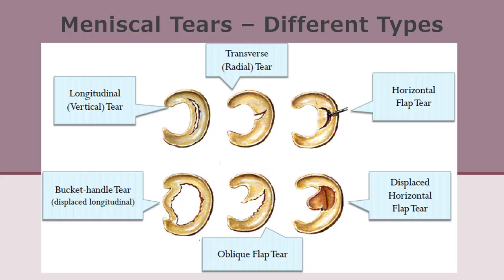Meniscus tears are classified by their shape and location. Different types of meniscus injuries include a longitudinal or vertical tear, a transverse or radial tear, horizontal flap tear, a bucket handle tear, an oblique flap tear, and a displaced horizontal flap tear.